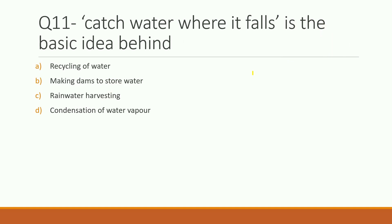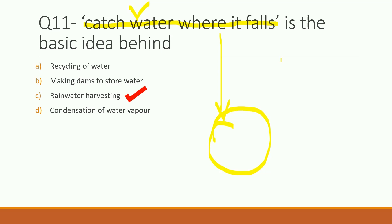Eleventh question: 'Catch water where it falls' is the basic idea behind which concept? Options are recycling of water, making dams to store water, rainwater harvesting, or condensation of water vapor. The right answer is rainwater harvesting — the idea is to catch and save rainwater where it falls and use it later.